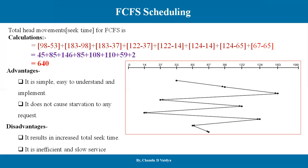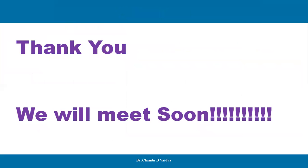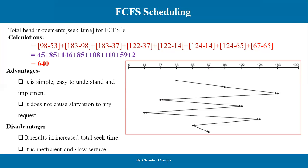Another disadvantage is inefficient and slow service. Because the order in which requests come in is the order they are served, it will be slow. So this concludes the First-Come-First-Serve calculations.